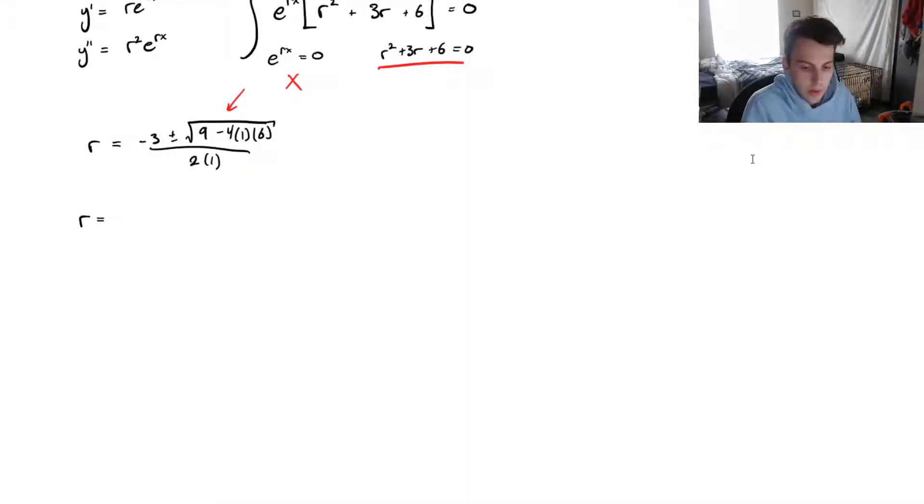b squared minus 4ac is a negative number. So we are going to go with the first case where we have imaginary solutions. So let's simplify this as much as we can. So this will be minus 3 over 2 plus or minus, and 9 minus 24 should be negative 15. So this will be plus or minus square root of 15 times our imaginary number i.